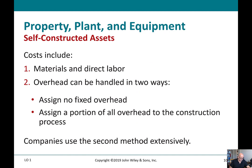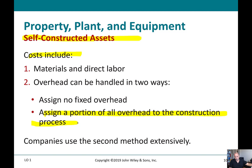If we have a self-constructed asset, it includes overhead costs, and we allocate a portion of overhead to the construction. If we're allocating indirect salaries across various projects, some overhead would be applied to inventory for indirect labor, and some would need to be allocated to the actual construction of something we're using. That allocated overhead would be capitalized as part of the property, plant, and equipment account.